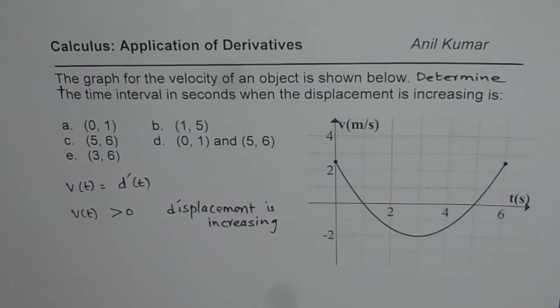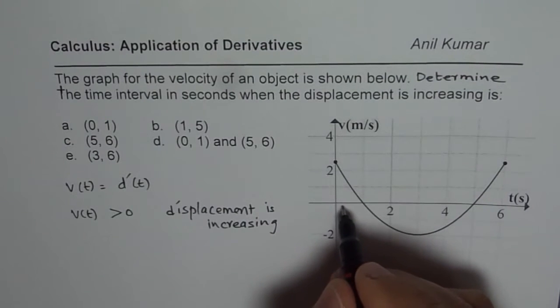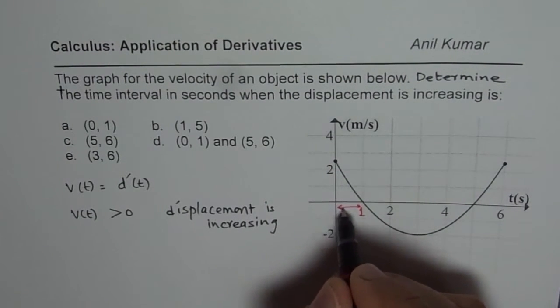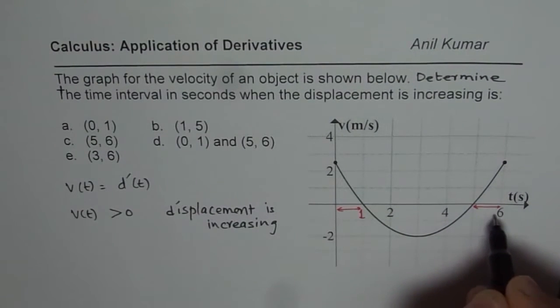That is important to understand. So, basically, if you look at this graph, from 0 to 1, in this interval, velocity is positive, and then it is positive from 5 to 6.